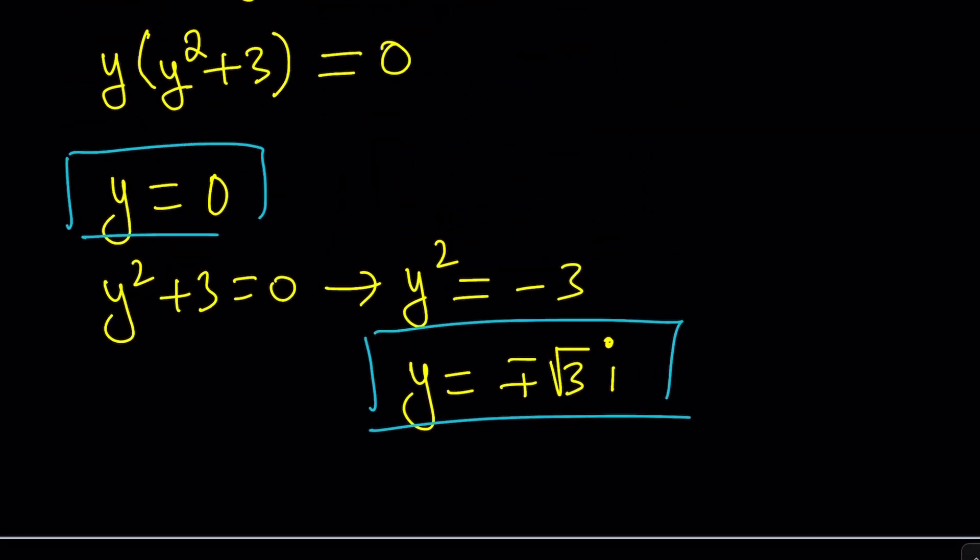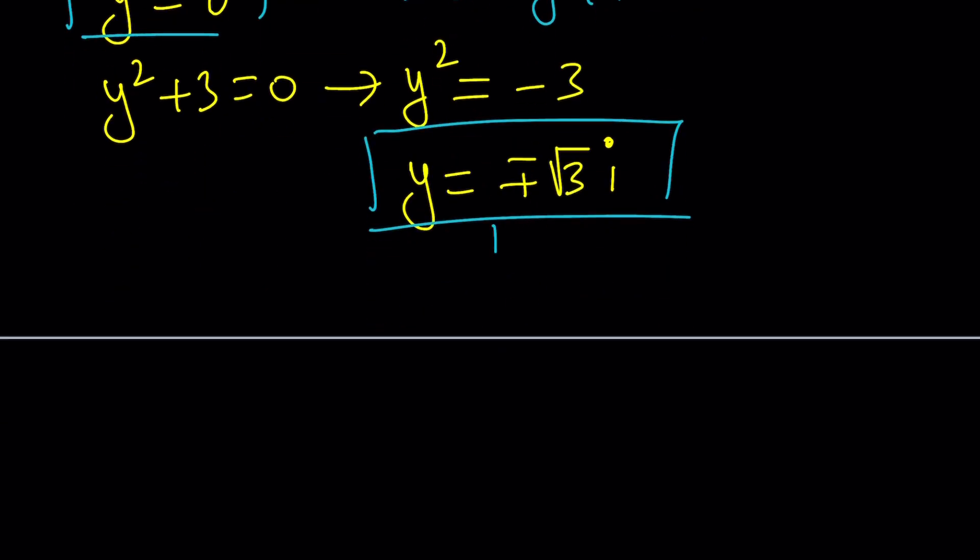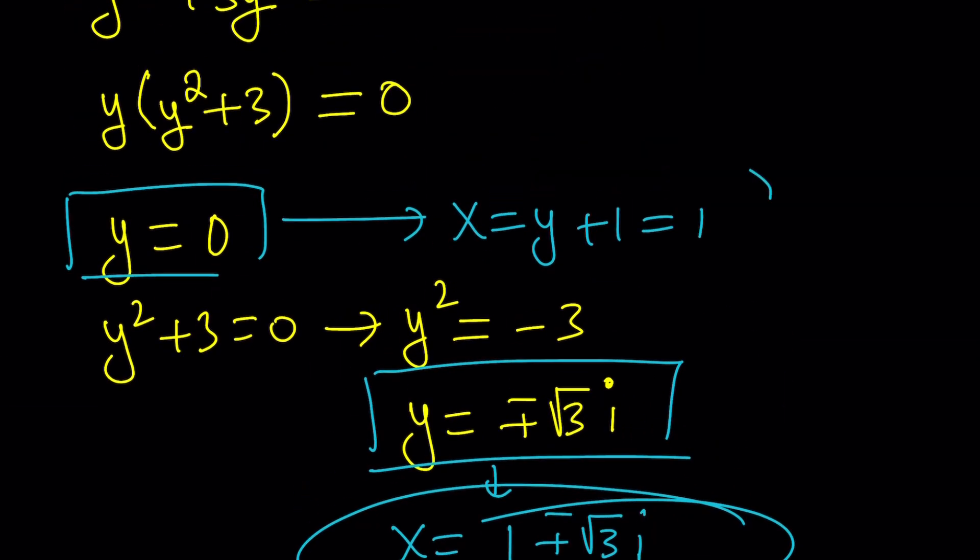So from here, we can basically say that, hey, x is equal to y plus 1, which is 1, or x is equal to y plus 1, which is 1 plus minus root 3i. So those are going to be the x values that we get by using the cubic formula. Okay. Great.